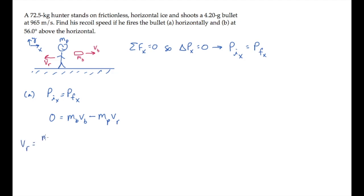Solve this for the person's recoil speed and substitute all the numbers. We find that the recoil speed is 0.559 meters per second, and is to the left in the negative direction as we showed in the figure.